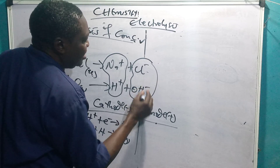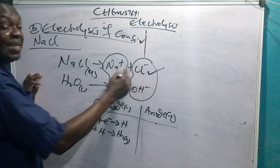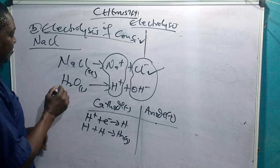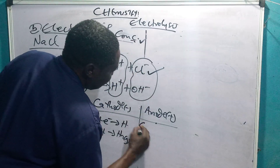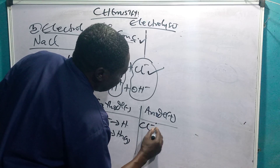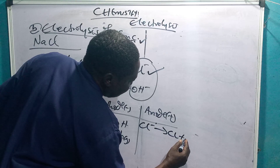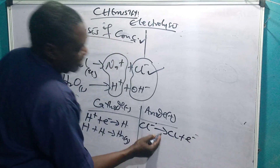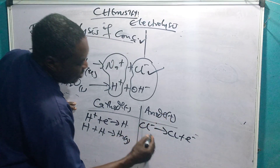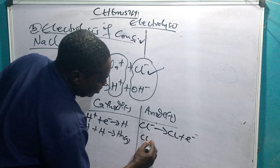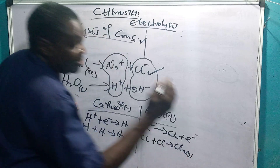At the anode, because we are dealing with concentrated solution, there are enough chloride ions present. Cl⁻ migrates to the anode and gives up its single electron, becoming neutral chlorine. Neutral chlorine atoms combine in pairs to give Cl₂ gas, which is discharged at the anode.